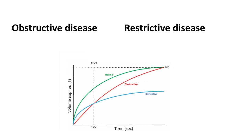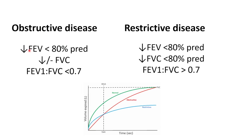In obstructive disease, we have a low FEV1. However, we reach a final FVC similar to the normal lung, because the air eventually gets into the lungs — it's just less efficient. The difficulty is that in the first second of expiration, volume is much lower. This gives us an FEV1 to FVC ratio of 0.7 or less.